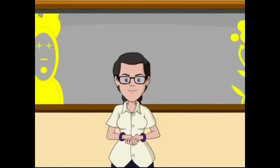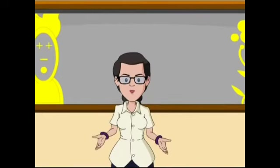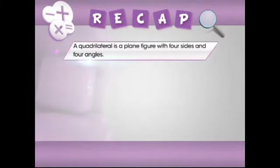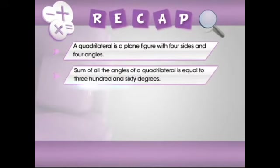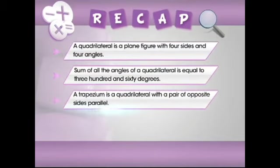Now with that extra bit of information, I'm sure you would like a recap. Here we go. In this module you have learned that a quadrilateral is a plane figure with four sides and four angles. The sum of all the angles of a quadrilateral is equal to 360 degrees.